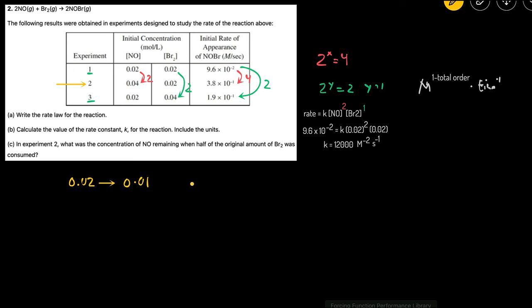So that means that the change in concentration of Br2 is equal to 0.01. It decreased by 0.01. To figure out how much the NO changed, we just use the mole-to-mole ratio. You can see that there's 2 NO for every 1 Br2. So then you can multiply this by 2 over 1. That means that the change in concentration of NO should be negative 0.02. And if we start at 0.04, we can subtract the 0.02. That means the final concentration will be 0.02 molar.